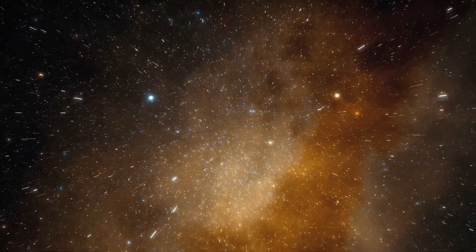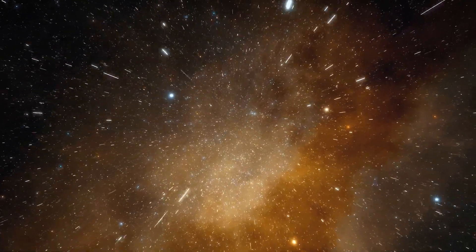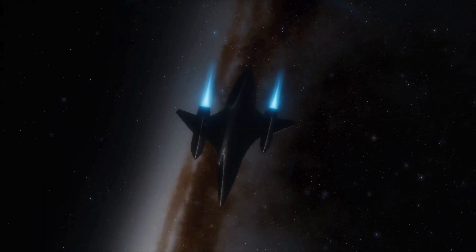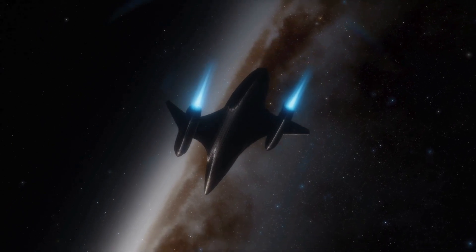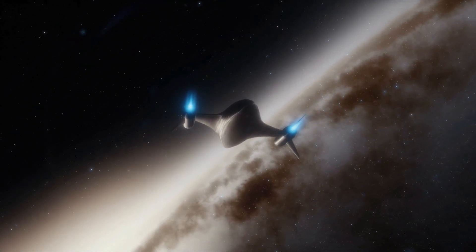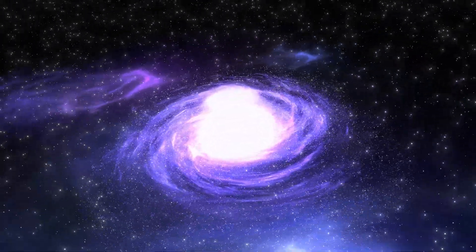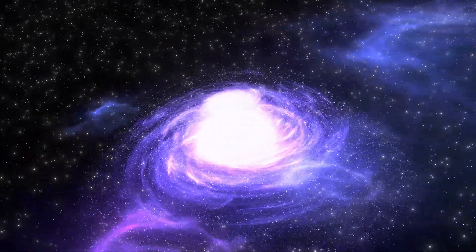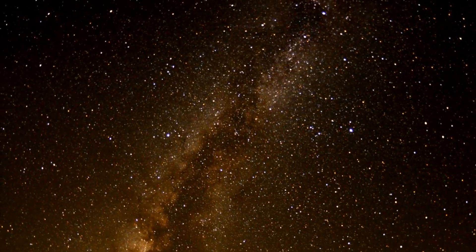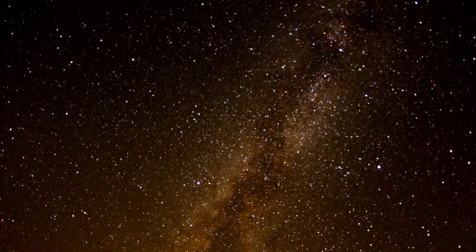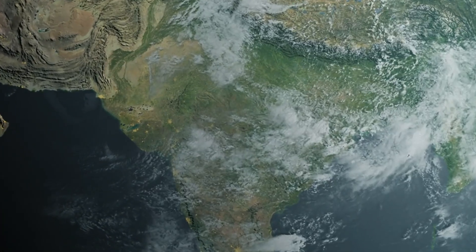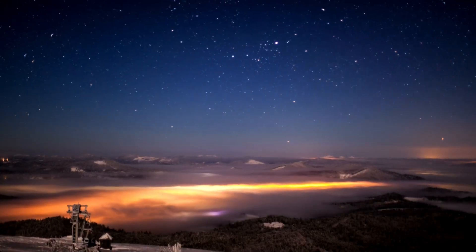Black holes are incredibly massive, but they can be surprisingly small. These cosmic enigmas are formed when massive stars collapse under their own gravity, creating a point of infinite density known as a singularity. Some black holes are only a few times the mass of our sun, known as stellar-mass black holes, born from the remnants of supernova explosions. But others are billions of times more massive—the supermassive black holes found at the heart of galaxies, including our own Milky Way, playing a crucial role in galactic formation and evolution.